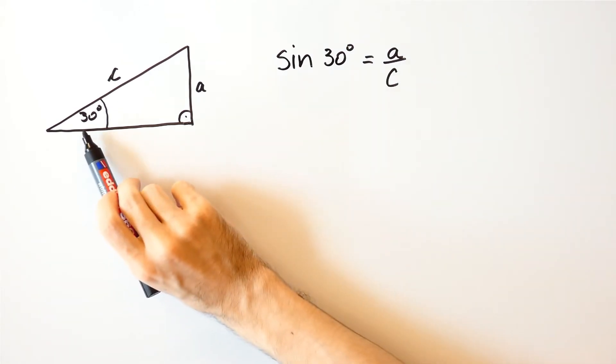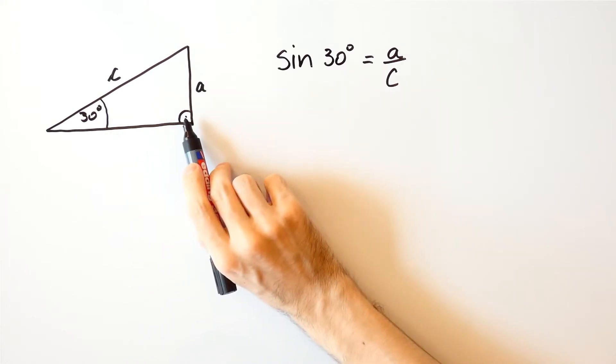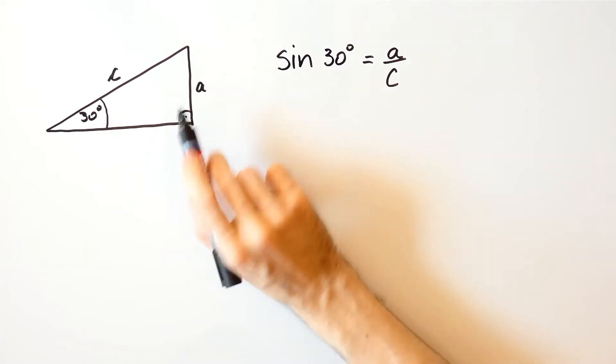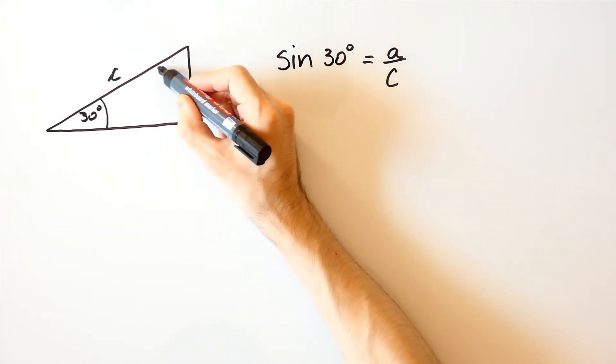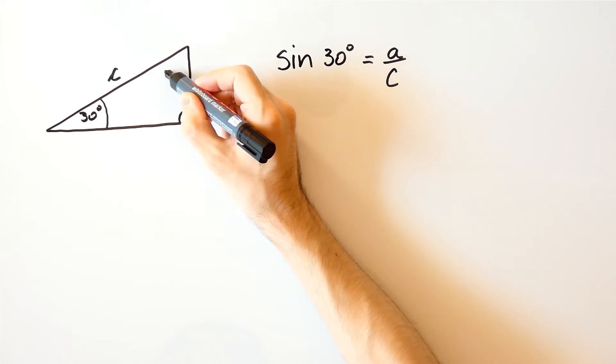Also, since the sum of angles of a triangle is 180 degrees, then this angle here is equal to 60 degrees.